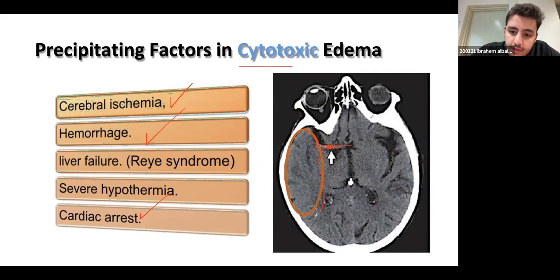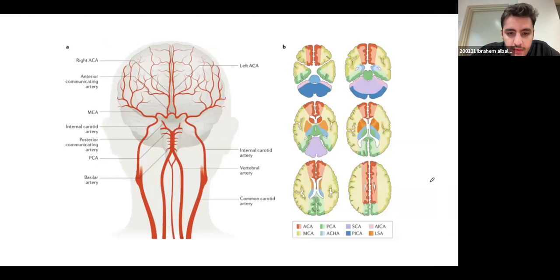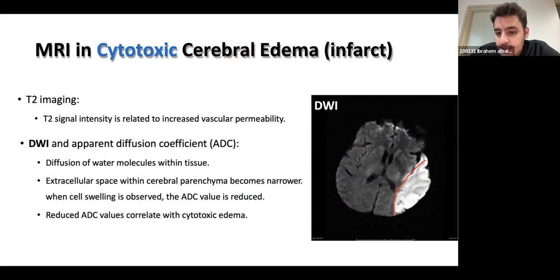The causes of cytotoxic edema are any cause of ischemia: hemorrhage, infarction, hypothermia, cardiac arrest — all of these cause low oxygen, causing neurons to swell. On MRI, you can see an artery that is most likely thrombosed with an area of infarction. Importantly, cytotoxic edema follows a pattern that corresponds to the part of the brain supplied by the affected artery — for example, the middle cerebral artery territory.